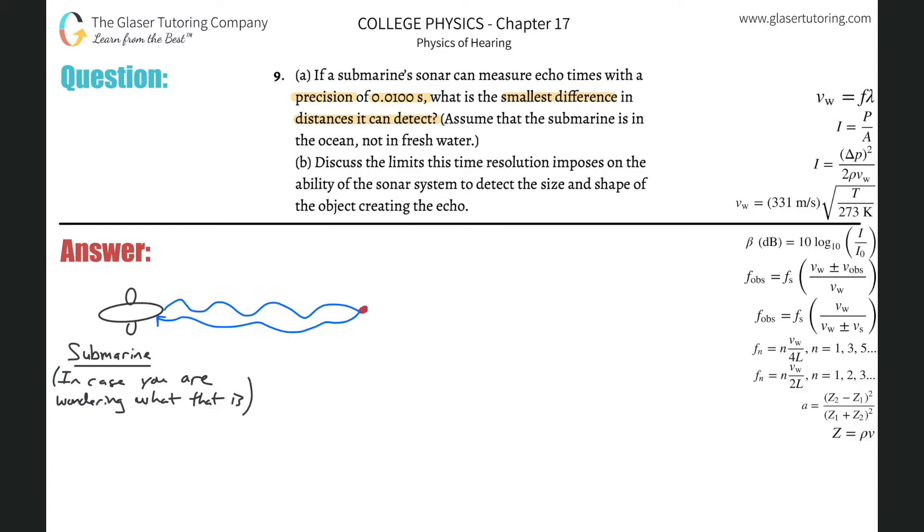So what I can do is use the formula simply: velocity is equal to distance over time. If I know the velocity of the sound wave in water, which they told us is in the ocean, which means saltwater, that velocity is about 1540. That's from your table 17.1. That means I can calculate the distance for the uncertainty, or the variance in the time, by plugging in 0.01.